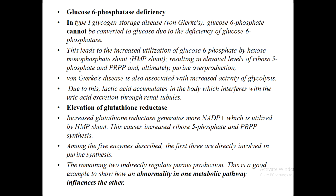Glucose-6-phosphatase deficiency causes Type 1 glycogen storage disease, known as von Gierke's disease. Due to the deficiency of glucose-6-phosphatase, glucose-6-phosphate accumulates and is increasingly utilized by the HMP shunt pathway, raising ribose-5-phosphate and PRPP levels, leading to overproduction of purines. Additionally, increased glycolytic activity causes lactic acid accumulation, which interferes with uric acid excretion.